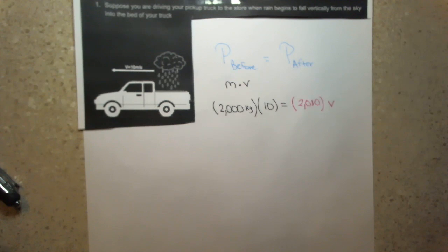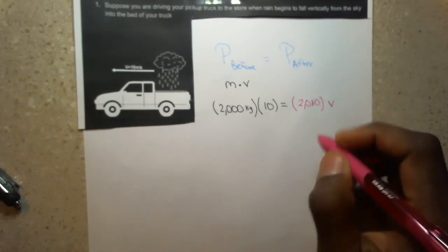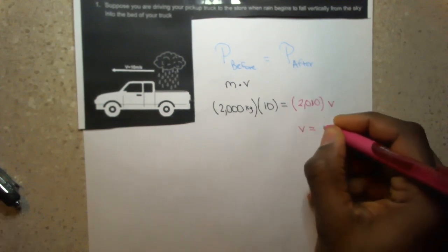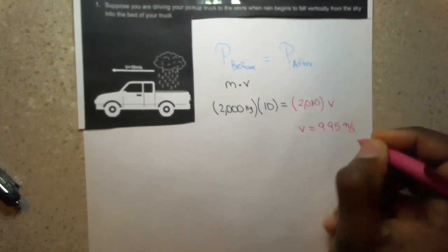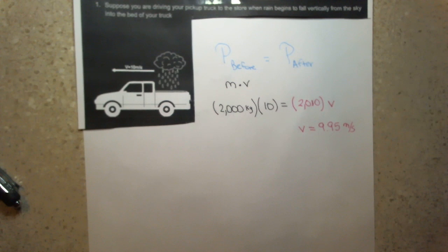When I do solve, I get that the velocity, our new velocity, our velocity after is equal to 9.95 meters per second. So the car is traveling a bit slower or the system's traveling a bit slower.